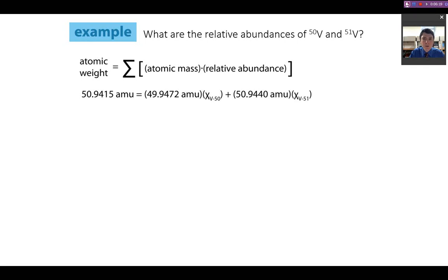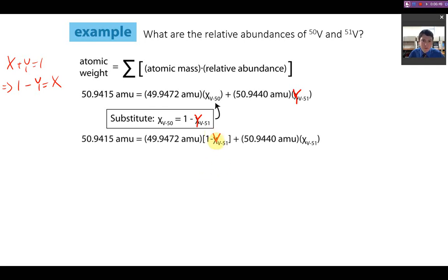This is just restating the equation that we saw earlier. Now we can substitute in. We saw that x + y = 1. So rearranging that, we get 1 minus the abundance for vanadium-51, which we're going to call y, is equal to x. We can then substitute those in. And we get 1 minus y times its isotopic mass, plus the isotopic mass of vanadium-51 times y. We now have one equation, one set of unknowns, because we've done this substitution.